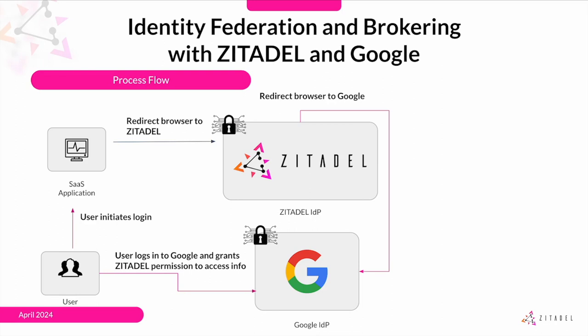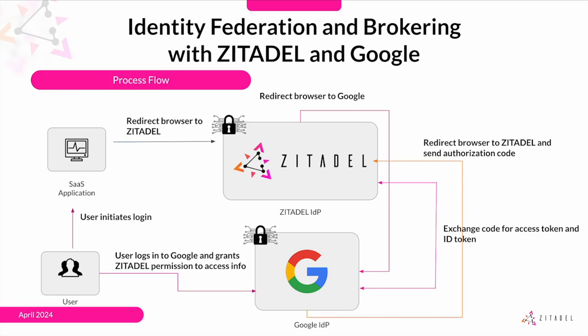Next, the user logs into their Google account if not already logged in. The user grants Citadel permission to access their information as defined by the scope. After that, Google redirects the user to Citadel with an authorization code in the URL, and Citadel exchanges the authorization code for an access token and an ID token at Google's token endpoint. This requires sending Citadel's client ID, client secret, and the obtained authorization code.